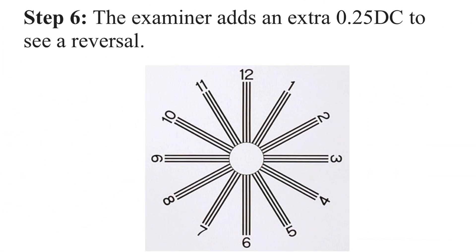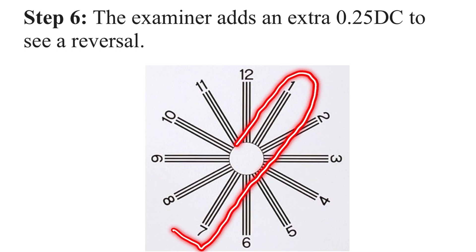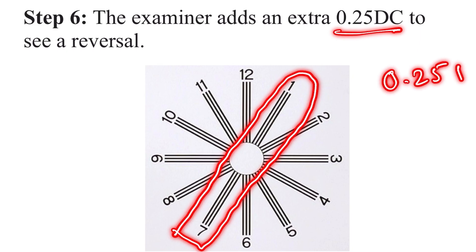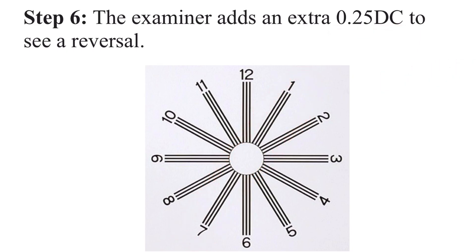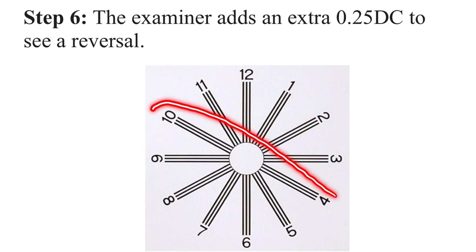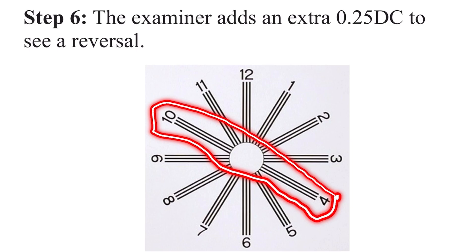To verify you have reached the correct endpoint, the examiner adds an extra 0.25 diopter cylinder to look for reversal. In the previous step the 1 and 7 lines were clear. By adding that extra 0.25 diopter cylinder, the lines 90 degrees apart — that is, the 4 and 10 lines — should become clearer than the others. If this happens, it confirms you have correctly arrived at the final subjective refraction.